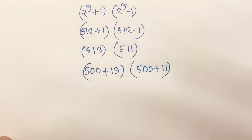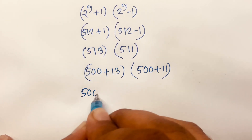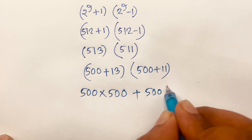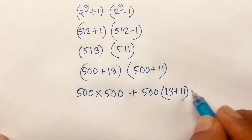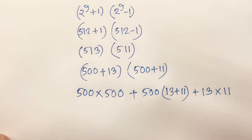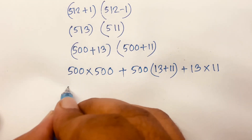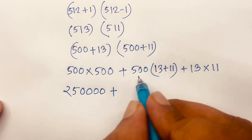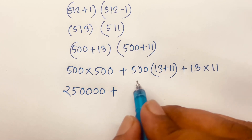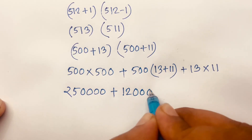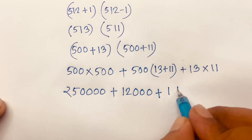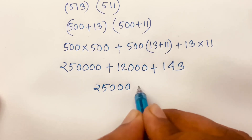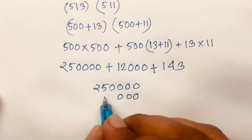Expanding this multiplication: 500 times 500, plus 500 times 13, plus 500 times 11, plus 13 times 11. That gives us 250,000, plus 6,500, plus 5,500, plus 143. Adding these together: 250,000 plus 12,000 is 262,000, plus 143 gives us the result.